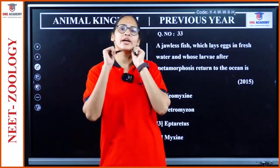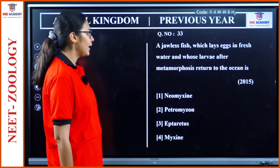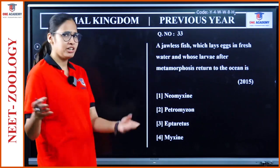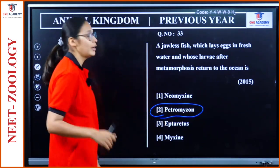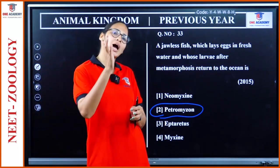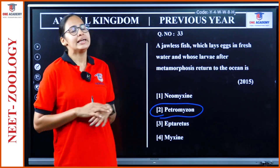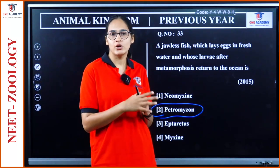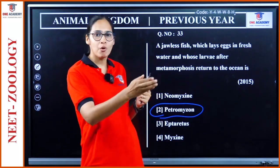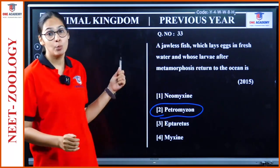Question 33: 'A jawless fish which lays eggs in freshwater and whose larvae after metamorphosis return to the ocean.' The answer is Petromyzon. Though both Myxine and Petromyzon are cyclostomes, it is Petromyzon that shows migration to freshwater for spawning and whose larvae return after metamorphosis — not Myxine. That is why option 2 — Petromyzon — not option 4.